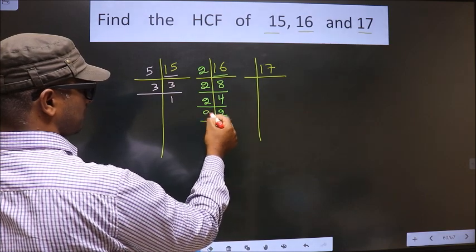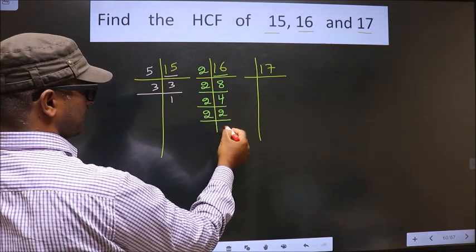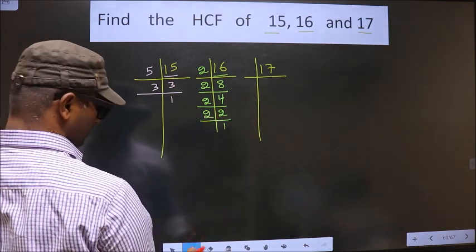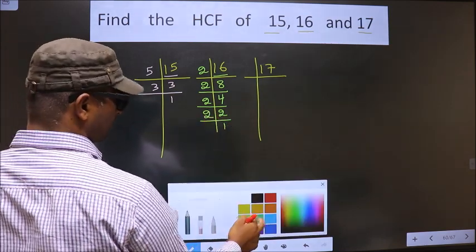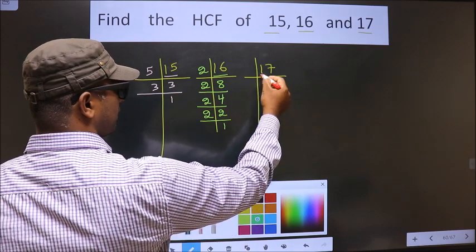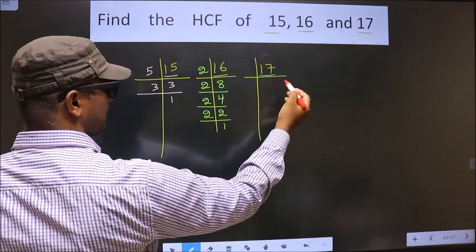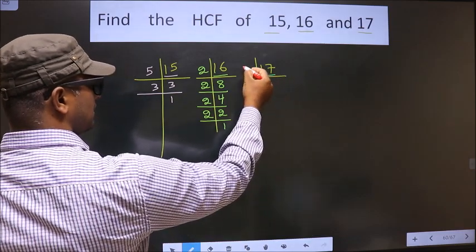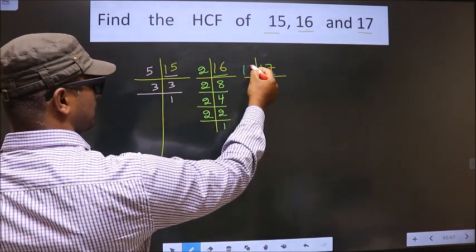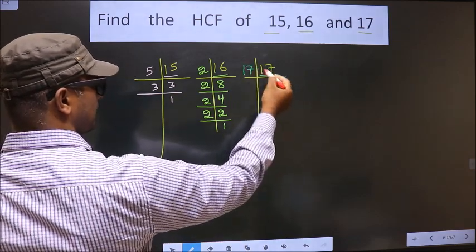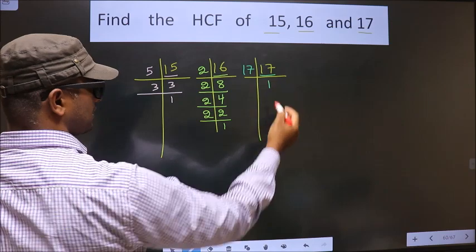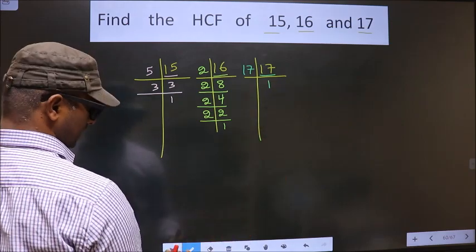Now 2 is a prime number, so we take 2 ones 2. Here we have 17. 17 is a prime number, so we take 17 ones 17.